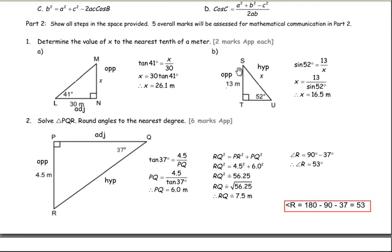In part two, the grayed-out marks represent the typical marks on a test. These are application questions. Number one says: determine the value of the unknown side x to the nearest tenth of a meter. You're given a 41-degree angle and a 30-meter side, and we want to find x. The x is across from the 41-degree angle, so that's the opposite side, and the 30 is the adjacent side.